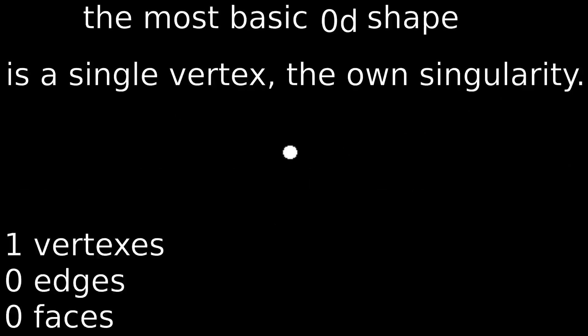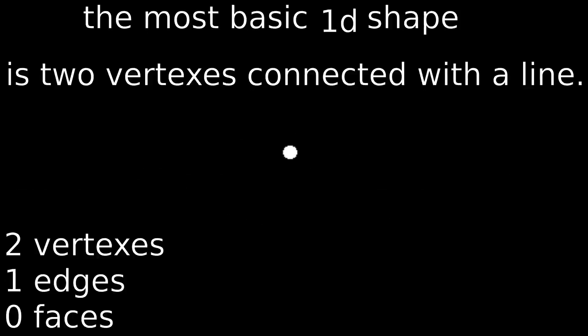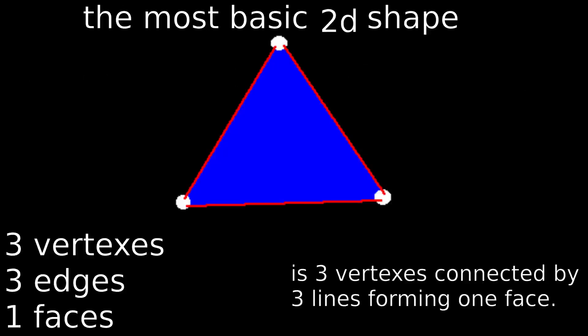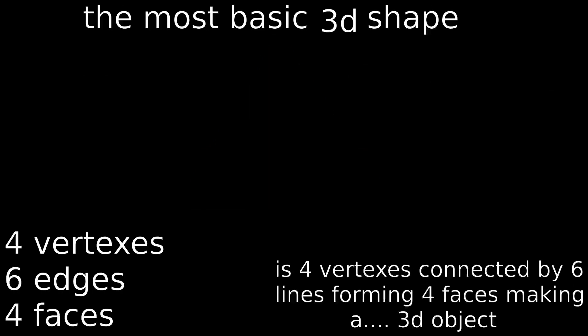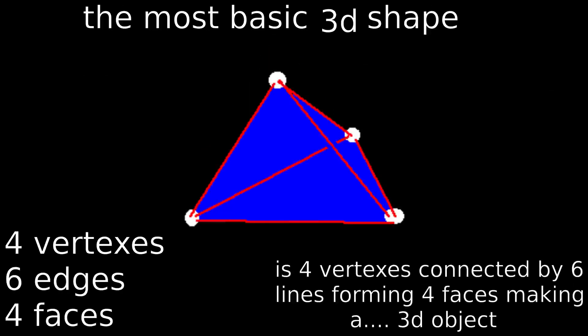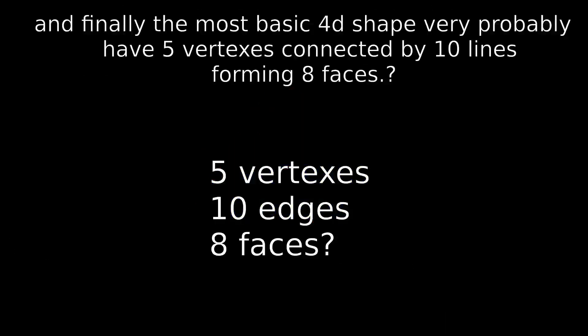I want to tell a way that you could possibly discover the vertices, edges, and faces of the most basic 4D shape. The most basic 0D shape is a single vertex — the singularity itself. The most basic 1D shape is 2 vertices connected with a line. The most basic 2D shape is 3 vertices connected by 3 lines forming 1 face. The most basic 3D shape is 4 vertices connected by 6 lines forming 4 faces, making a 3D object. And finally, the most basic 4D shape very probably has 5 vertices connected by 10 lines forming 8 faces.